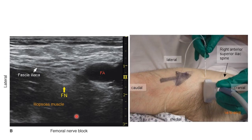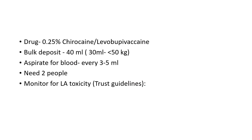Here is a representation of how the fascia iliaca block is performed. Looking at the patient's right thigh, the needle comes from the lateral aspect going medially, and the tip of the needle must not reach farther than the medial two-thirds to lateral one-third junction.